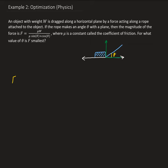Our force is equal to mu times W, multiplied by mu times sine theta plus cosine theta. We can rewrite the force by putting the denominator into the numerator — raising it all to the negative one. From here, we're going to take the derivative of F with respect to theta.